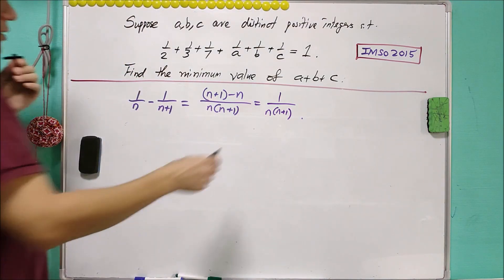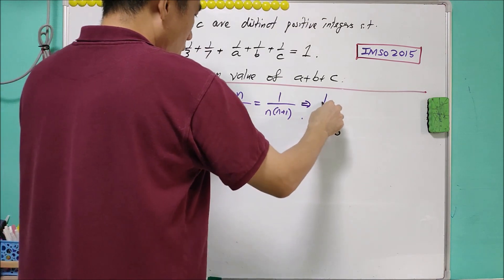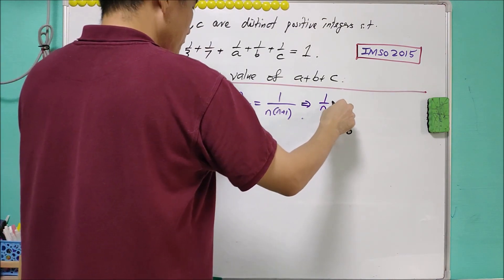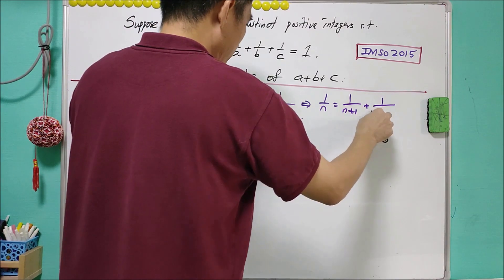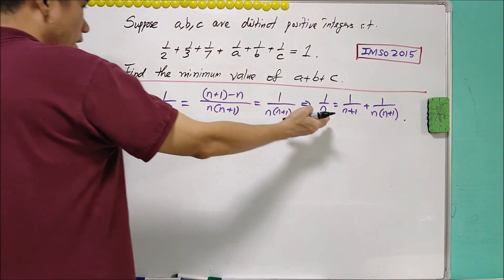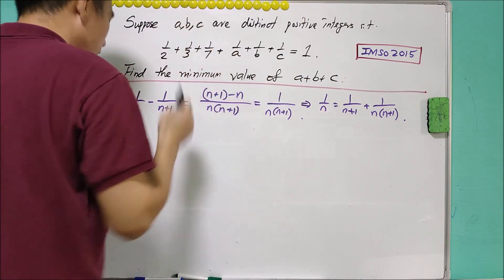What does it mean? So this actually implies that 1 over N is equals to 1 over N plus 1 plus 1 over N times N plus 1. And this gives us some idea to solve the equation.